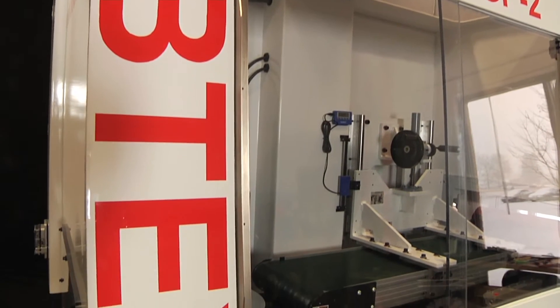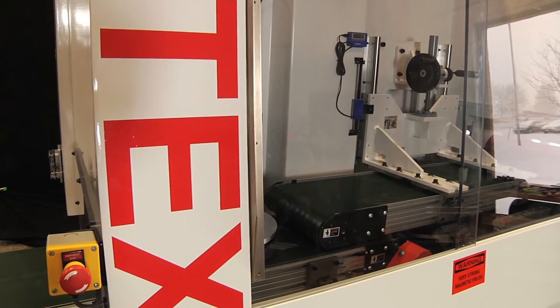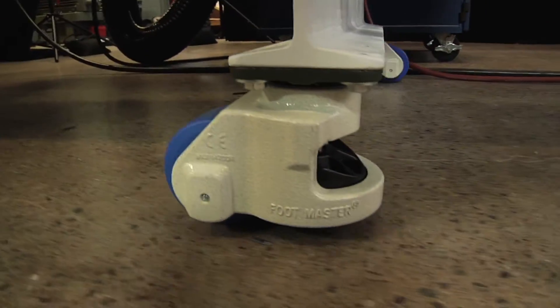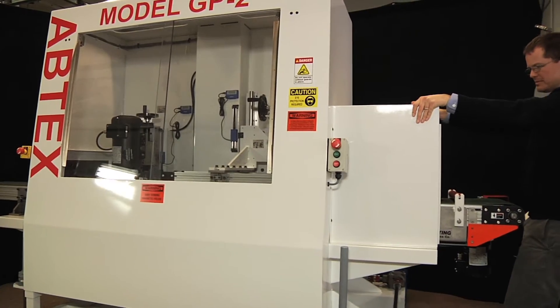So Abtex engineers designed a deburring center that's both simple and innovative, with a small footprint to save floor space, and rugged casters for easy movement around the manufacturing floor.